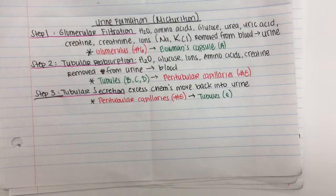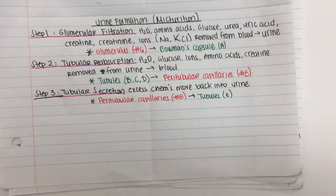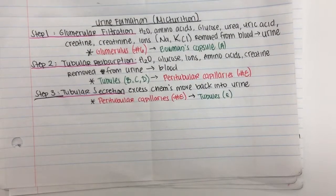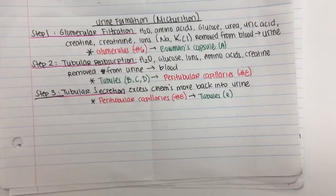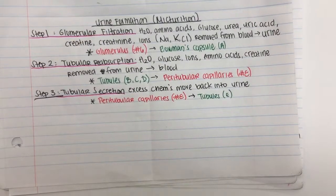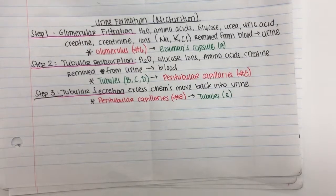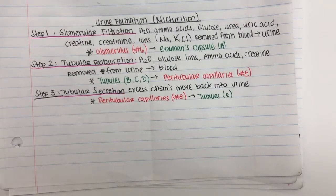So your urine ends up containing water, uric acid, urea, creatinine, and some of the salts. It should not contain any glucose, amino acids, or proteins. What do we call it if your urine does contain glucose? Diabetes — because for some reason there's way too much glucose in your blood, so it gets released into the urine.